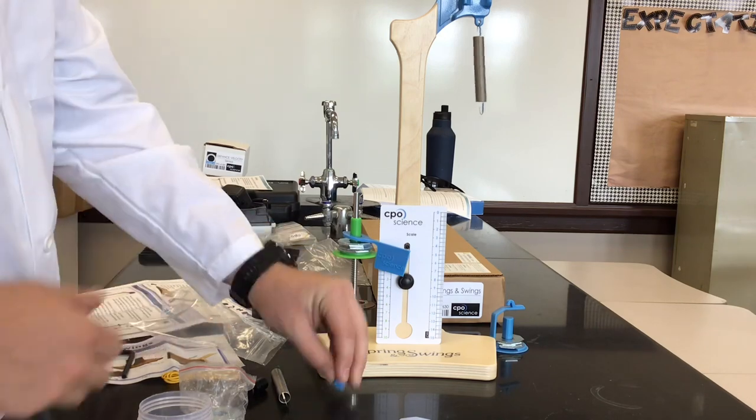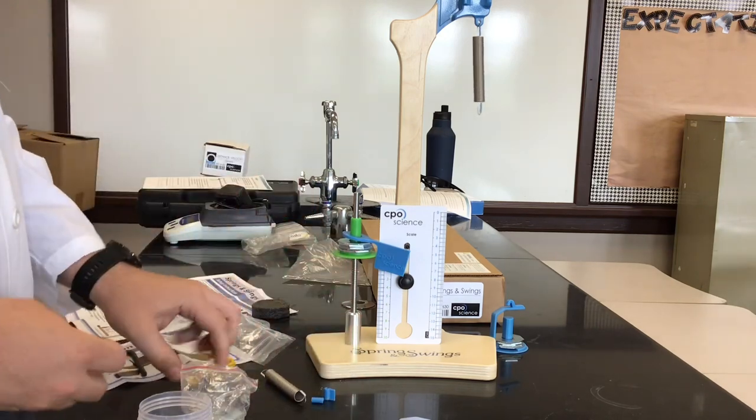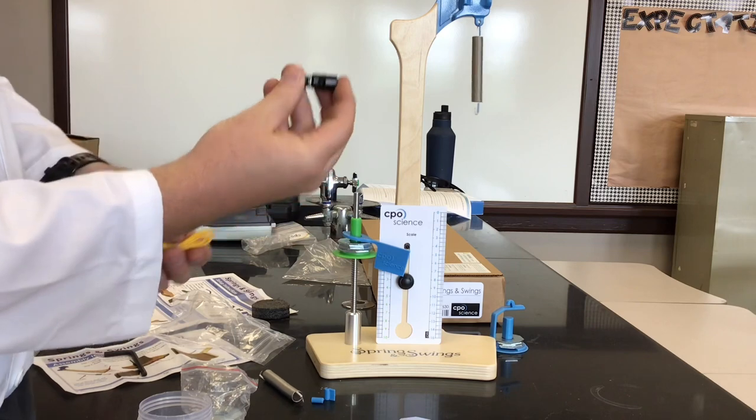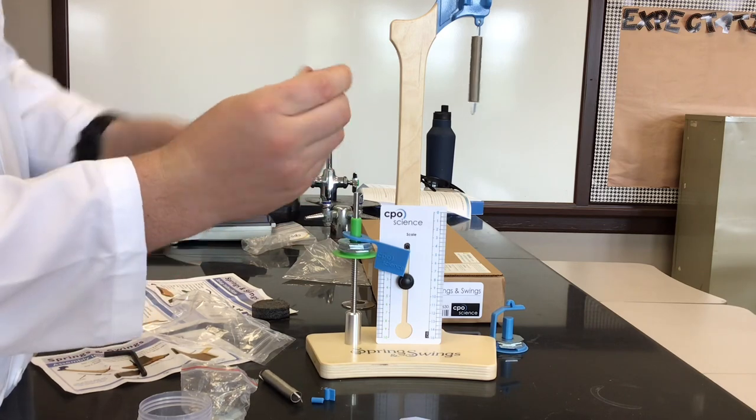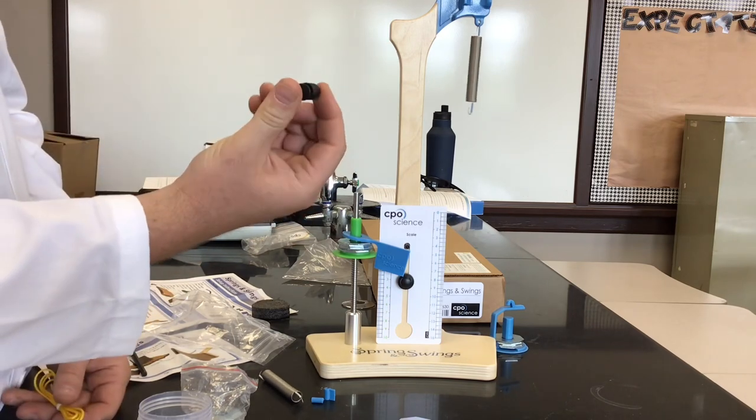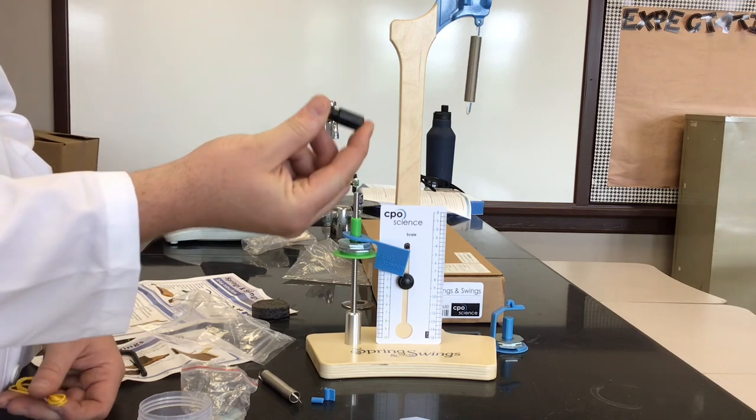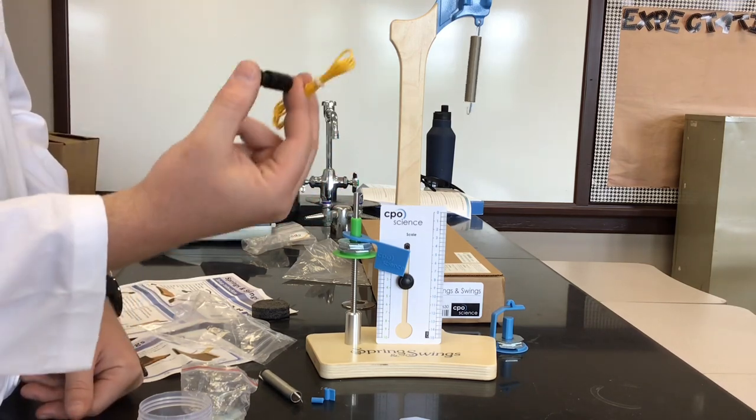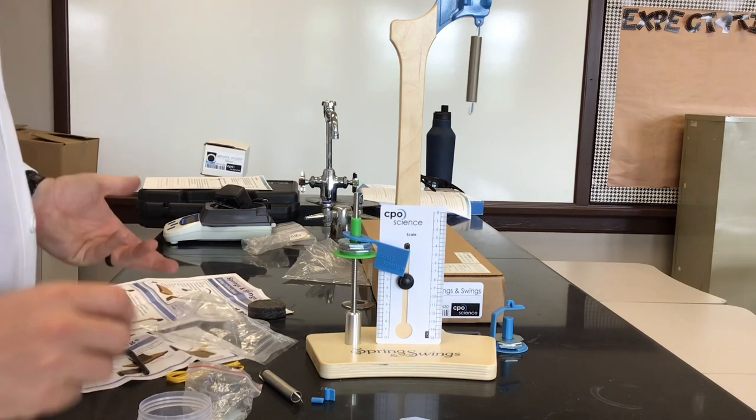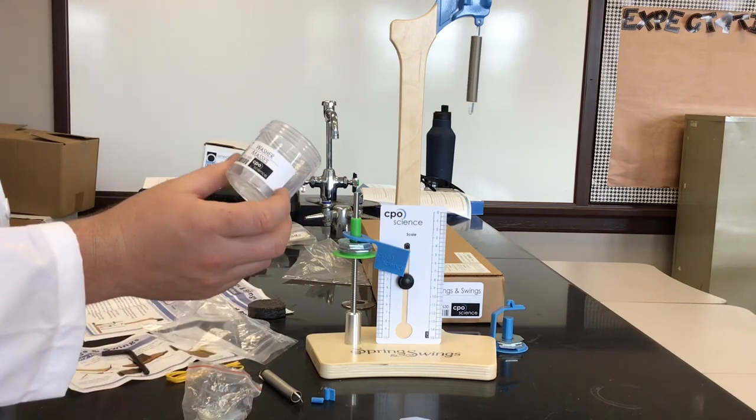Last two pieces, I was actually looking for one of these string clamps for another lab, so you can find one of those in the springs and swings. And it comes with this rope. Again, we'll use that for a future lab.